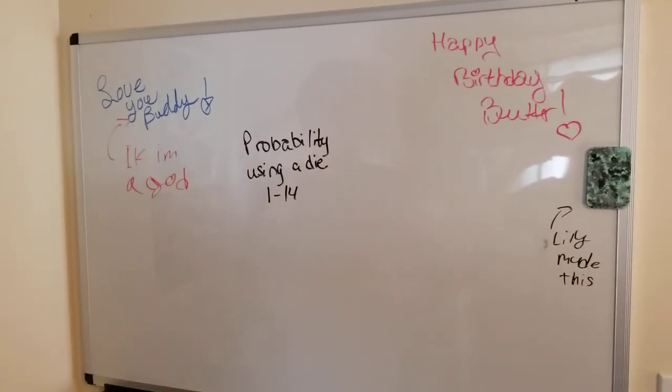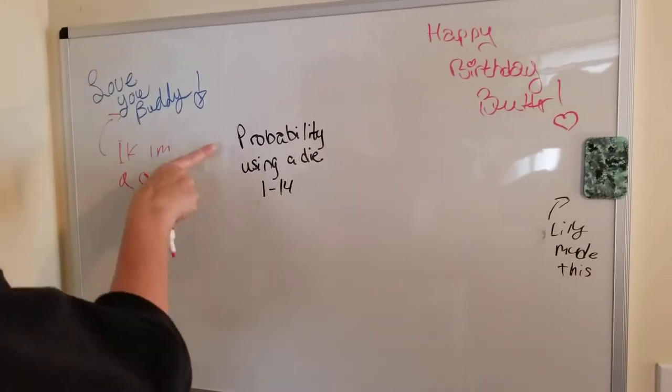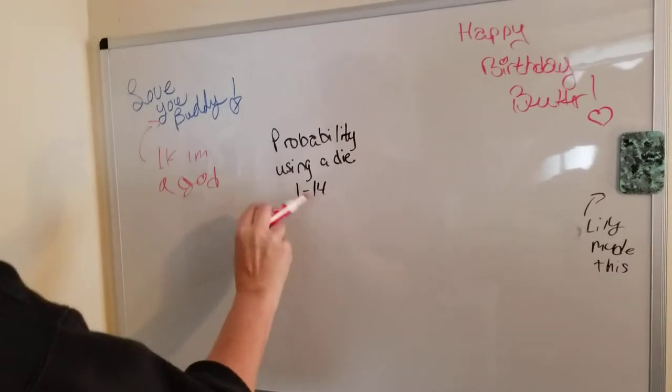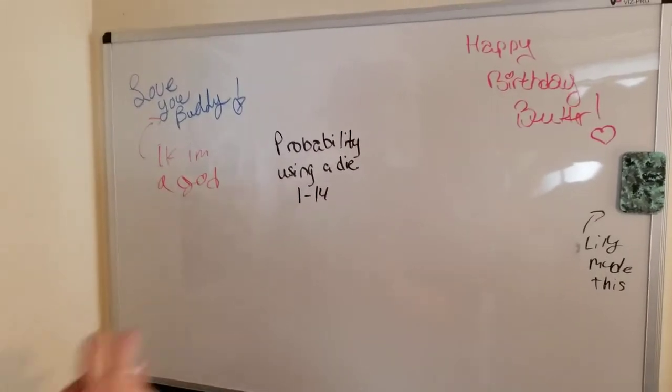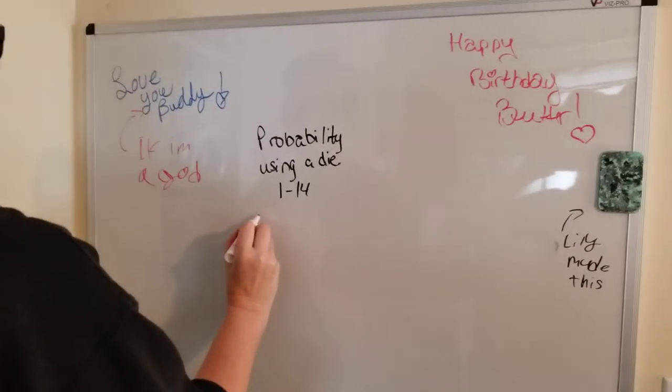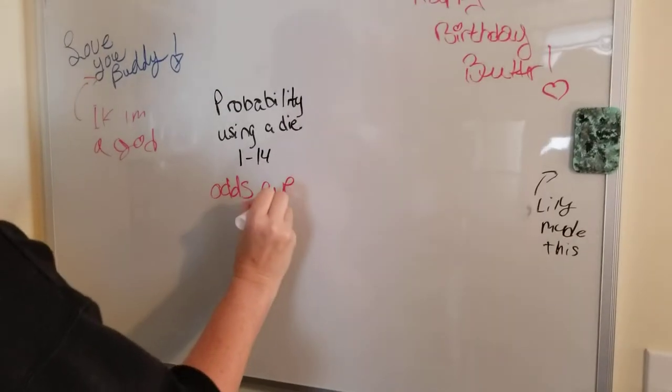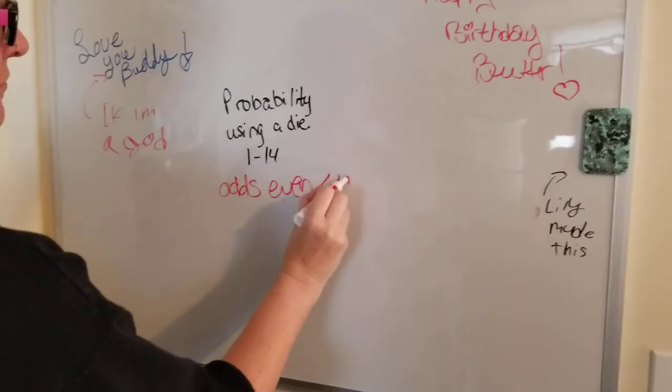Hi, my name is Avery Guderis, and I am going to show you how to get a probability using a single die between the numbers of 1 and 14, and we want the odds of getting an even number less than 10.